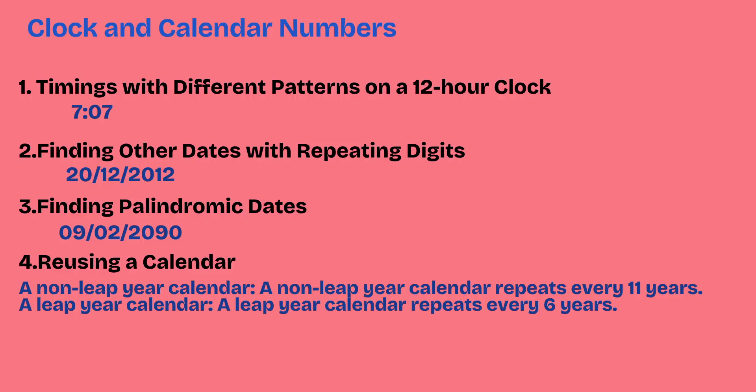Let us see clock and calendar numbers. Looking at timing with different patterns on a 12-hour clock, for example 7:07 — that is 7 hours 7 minutes — this is a palindromic number. Finding other dates with repeating patterns: here 2,0,1,2 — if we add this date and month, it leads to the year 2,0,1,2. This is a special property.